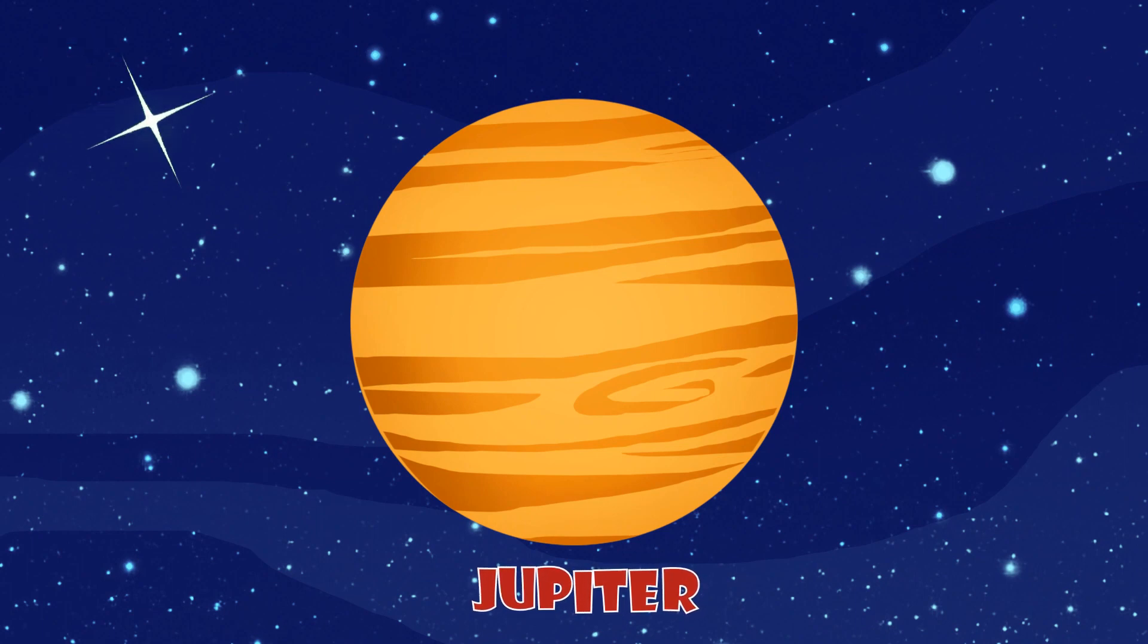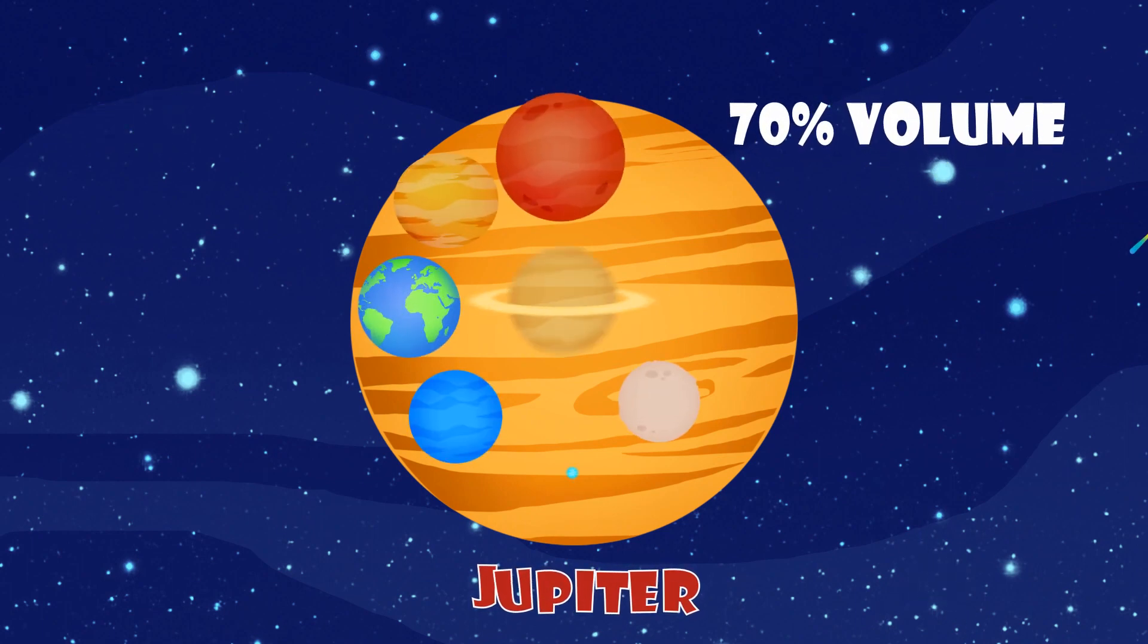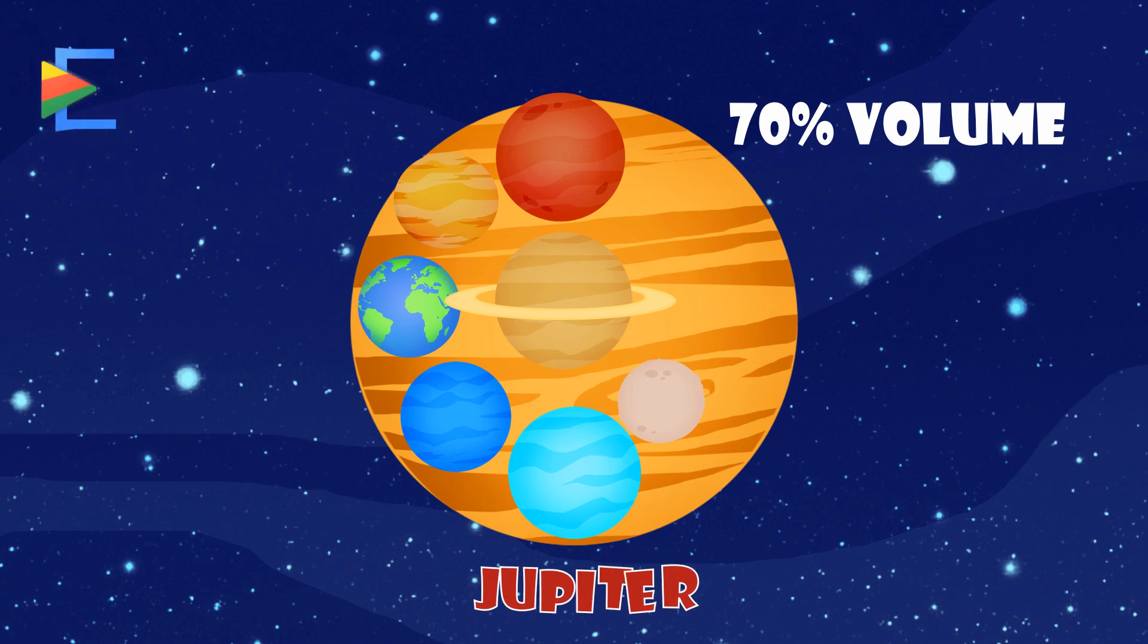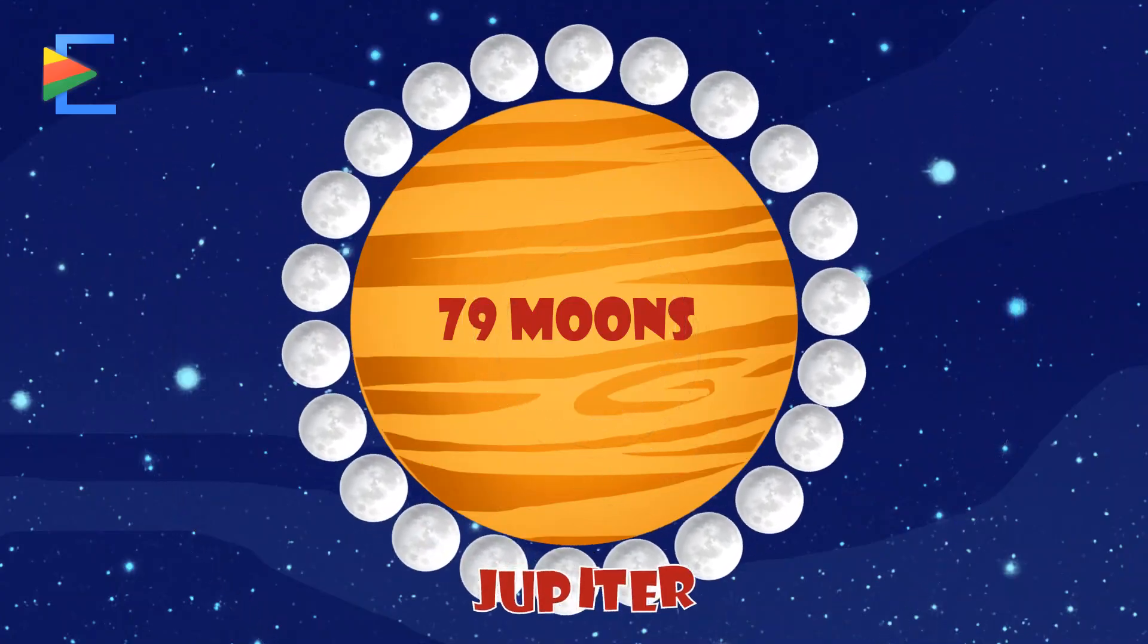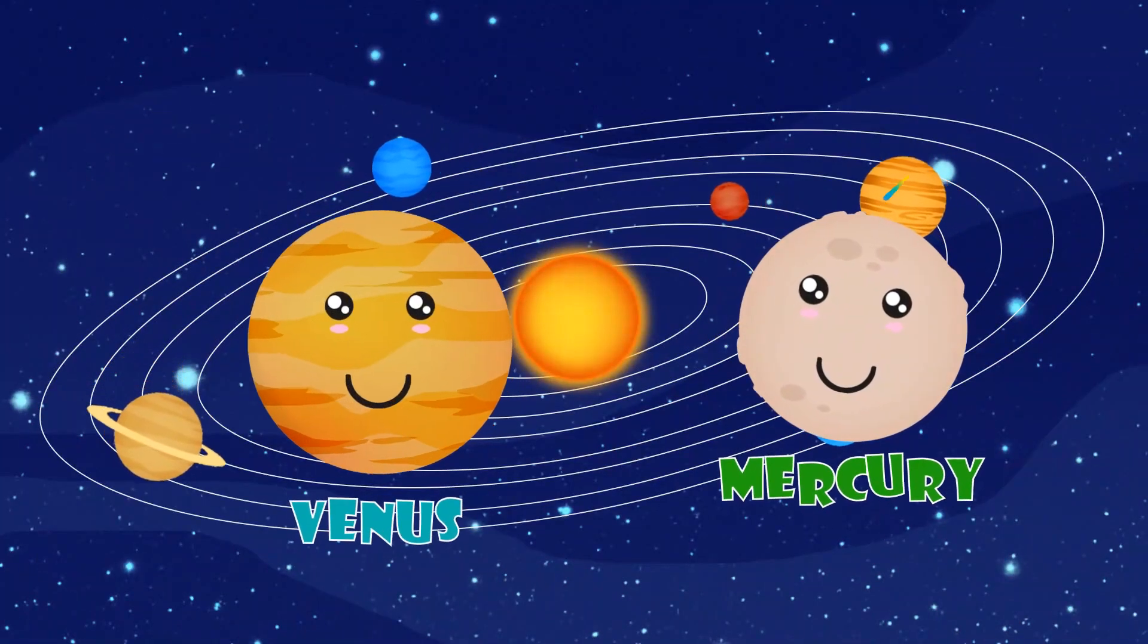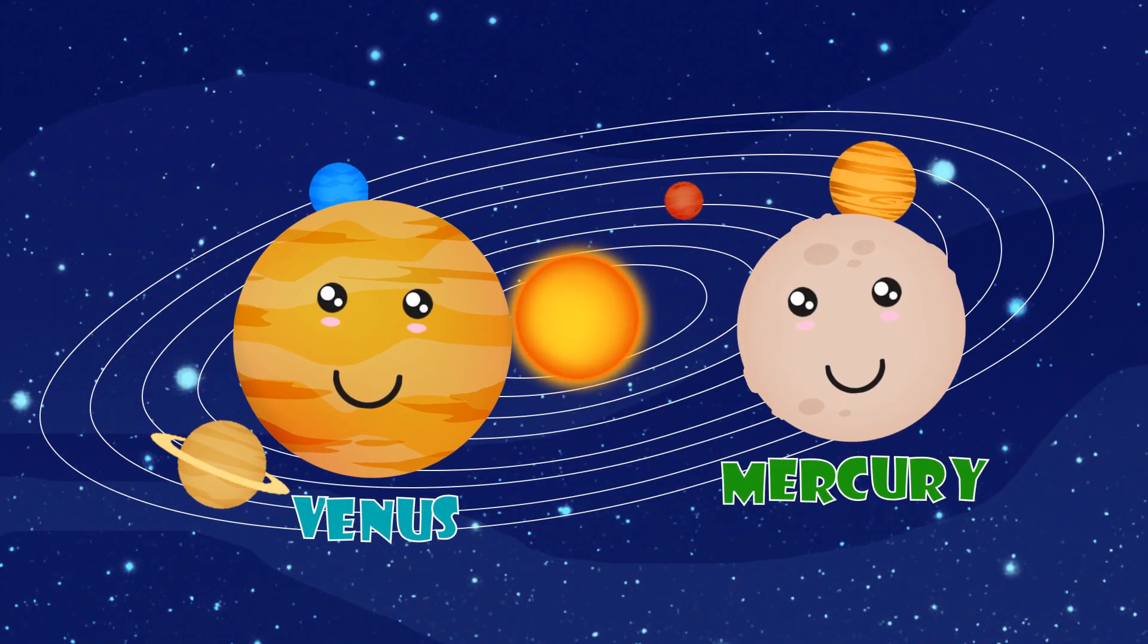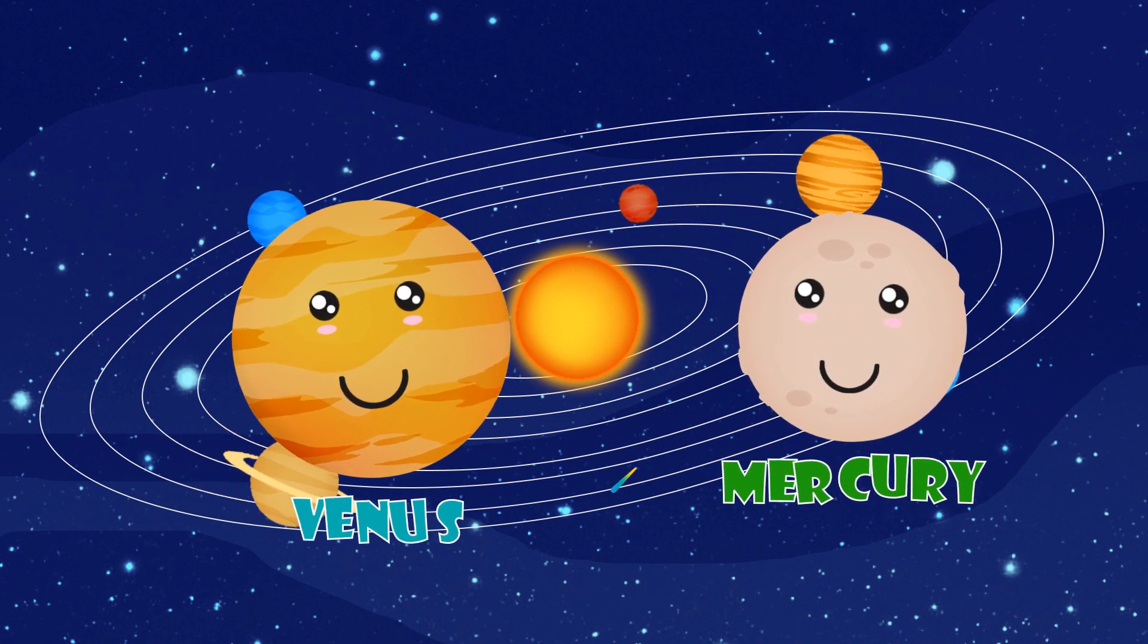Jupiter is the largest planet. It could contain the other 7 planets in just 70% of its volume. There are 79 known moons orbiting Jupiter. Mercury and Venus are the only 2 planets in our solar system that have no moons.